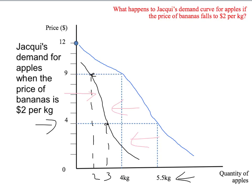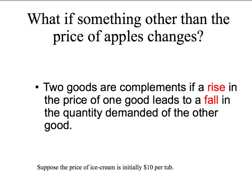A final word of warning: we've said that apples and bananas are substitutes for Jackie, but that doesn't mean they're substitutes for everybody. What one person views as substitutes, another might like to have together — what we call complements. Two goods are complements if a rise in the price of one good leads to a fall in the demand for the other good.